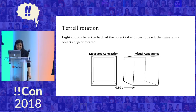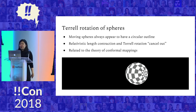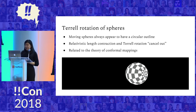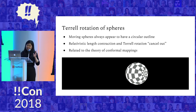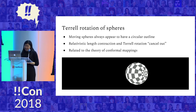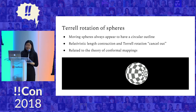You can also do this with a sphere. A still shot from the ray tracer shows that moving spheres always appear to have a circular outline. This is because these two effects — the actual physical length contraction and the visual distortion of Terrell rotation — actually always cancel out. There's some interesting math behind this, related to the theory of conformal mappings, which are a type of mapping that always preserves angles and circles.